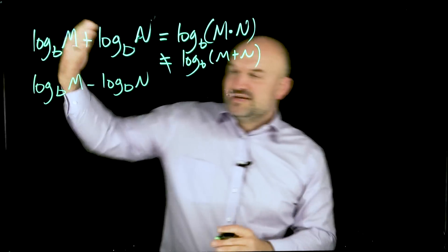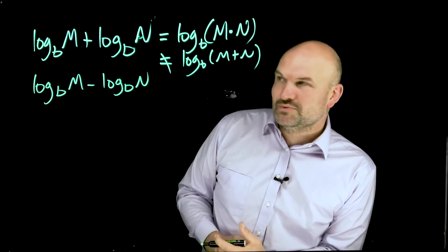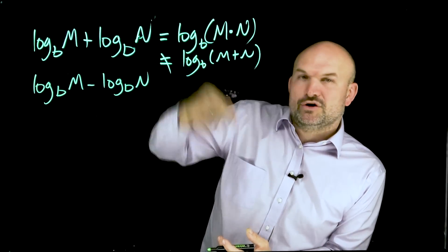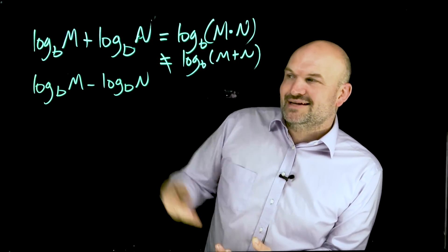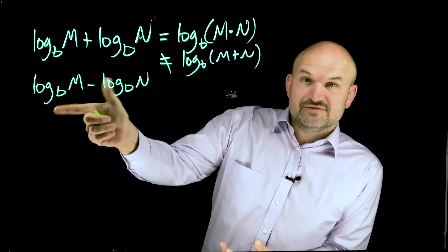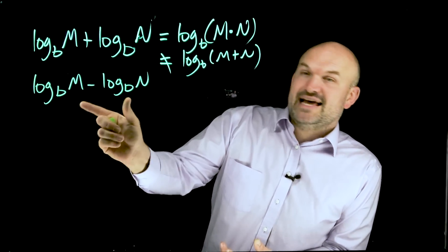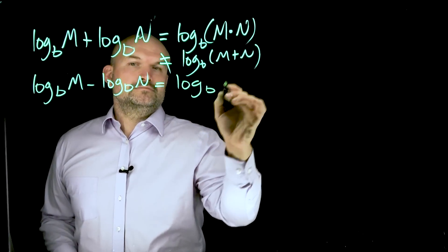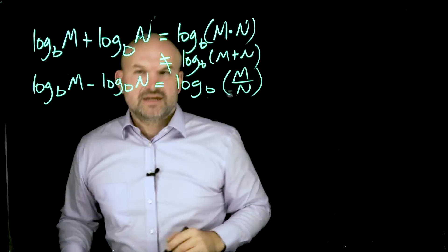Now thankfully, this product rule is very similar to this quotient rule. So if you have addition of two logarithms with the same base and that equals the product of their arguments, well, then hopefully you recognize, or it's easy to make a relationship. If I have the difference of two logarithms with the same base, then that is going to be the quotient of my two arguments.